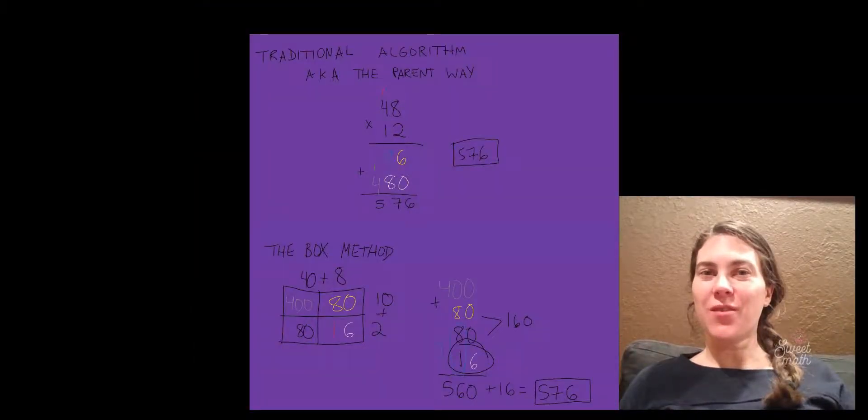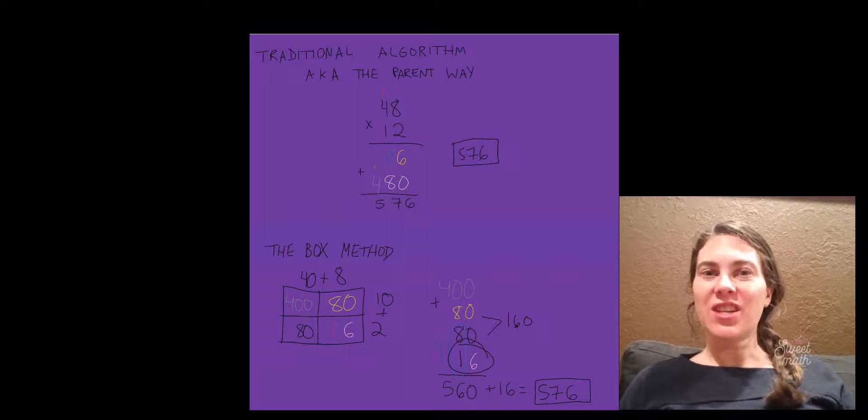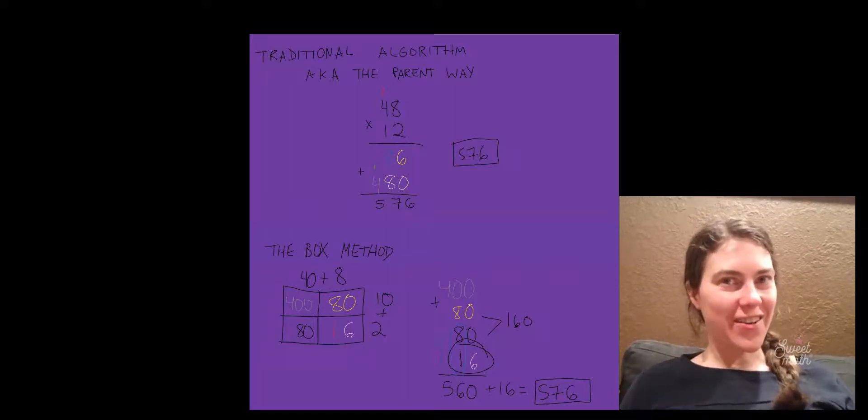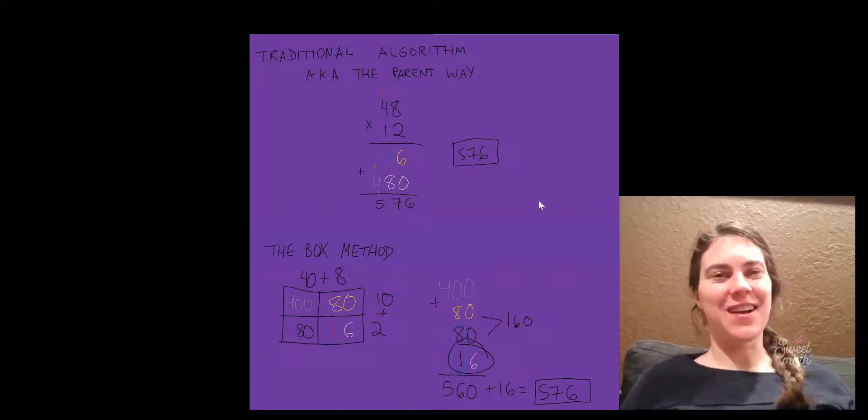Now I'm going to show you what the traditional algorithm and the box method have in common. Again, I color coded it all. Same colors as before.